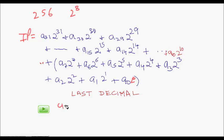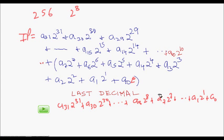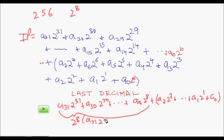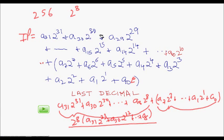The IP address is a31 × 2^31 + ... + a8 × 2^8 + a7 × 2^7 + ... + a0. Everything from a8 × 2^8 upward is divisible by 2^8. So we only need to check the last 8 bits — a7 through a0. If the last byte (in dotted decimal) is divisible by 256, the whole address is divisible by 256.